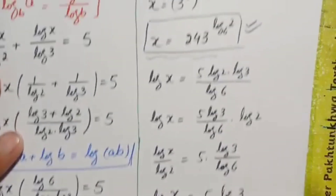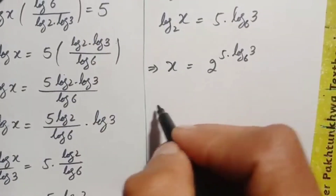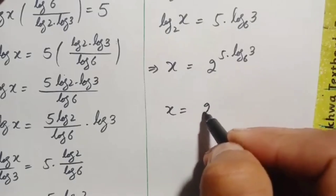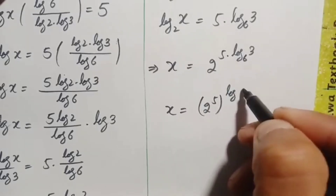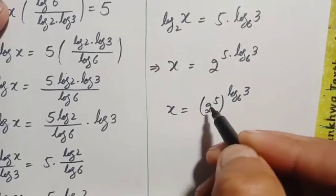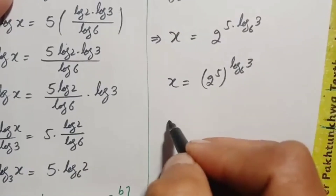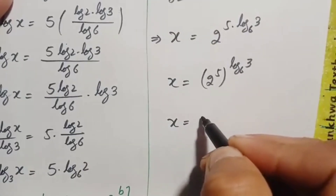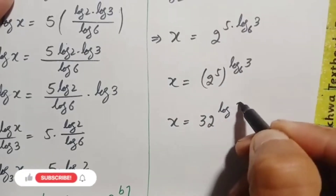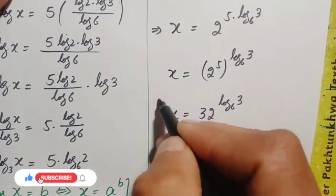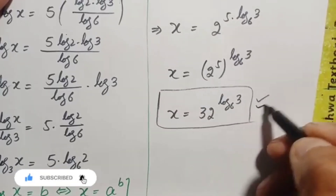Using the exponential identity again, this becomes x equals 2 raised to power 5, all raised to the power of log base 6 of 3. Since 2 raised to power 5 equals 32, this gives x equals 32 raised to the power of log base 6 of 3. This is our answer using the second approach.